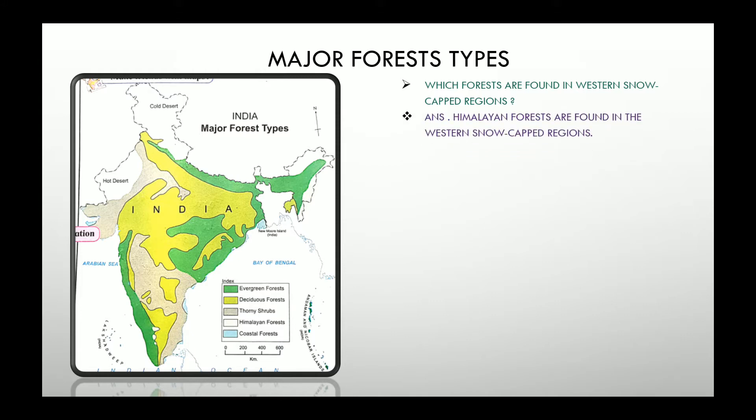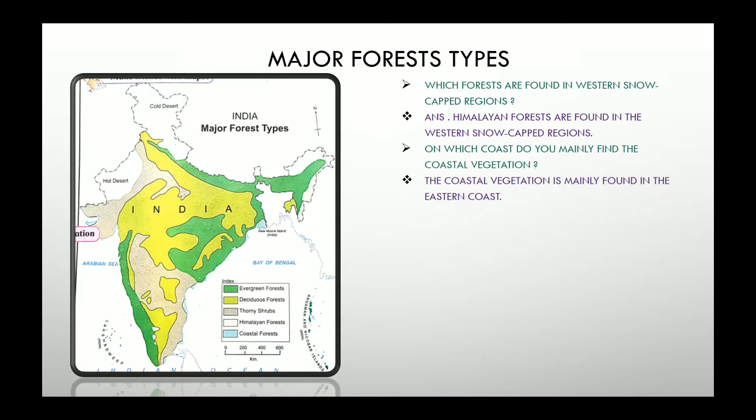Let's have a look at the questions. Which forests are found in the western snow-capped region? It is Himalayan forest. The Himalayan forests are found in the western snow-capped region, that is where you can see snowfall. Second, on which coast do you mainly find the coastal vegetation? The one in blue color is occupying the eastern part of the country.